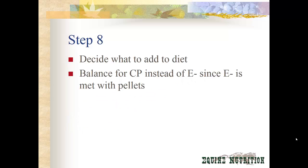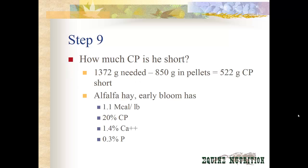So what do we do? We have to decide what to add to the diet. We need to balance for crude protein this time, instead of energy, since his energy requirement is being met with the pellets. For this example I have chosen alfalfa hay, early bloom. We figure out how much crude protein he's short: 1,372 grams needed minus 850 grams provided by the pellets equals 522 grams of crude protein short.